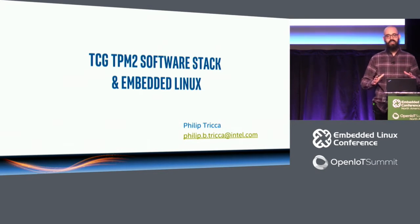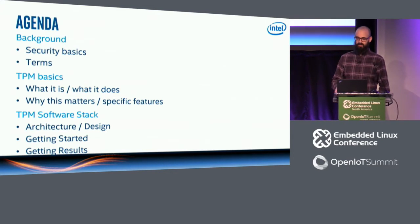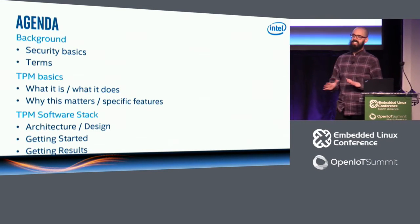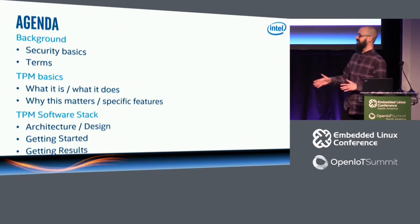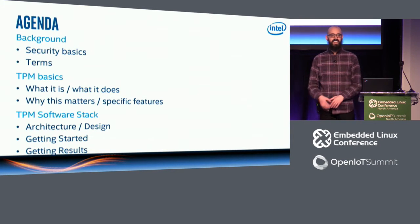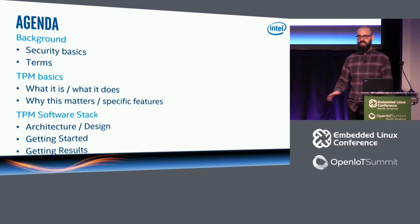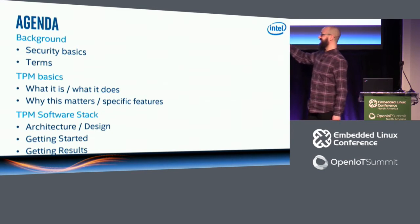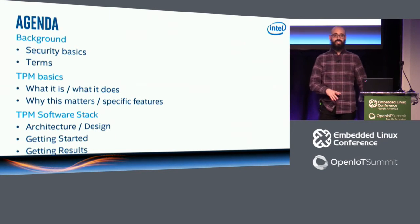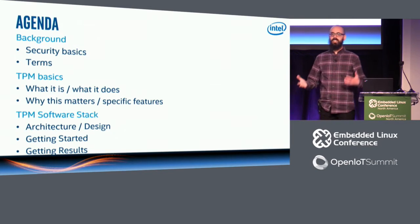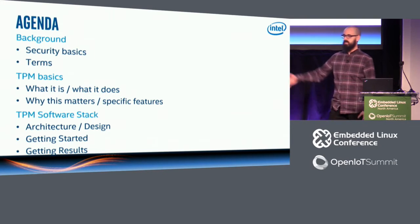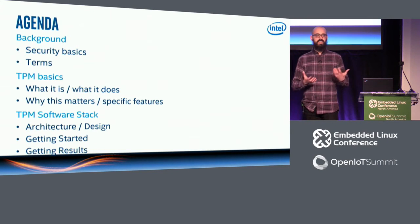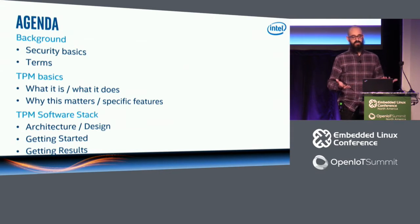The talk today is largely focused on three specific areas. We'll start out with some background stuff, just a level set. Then the second arc is going to be about what the TPM is, what it does, what it's intended for, and really what it's not intended for. And finally, we'll talk about the software stack — the architecture, what it's meant to do, the different components involved. We'll get into how you can actually pick it up, kick the tires if you've got a system that has a TPM. Even if you don't, there's a simulator you can run in software. And then we'll talk about some actual use cases, ways you can implement some meaningful security properties in the embedded Linux systems that I'm hoping you all are building.